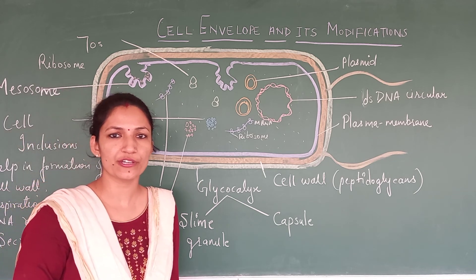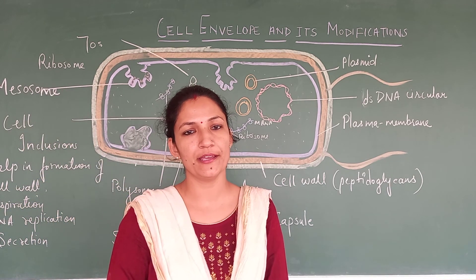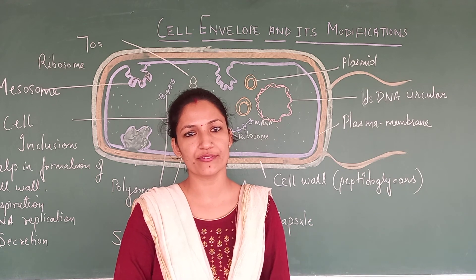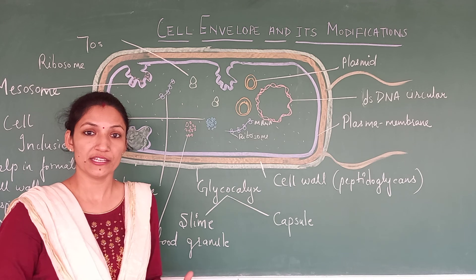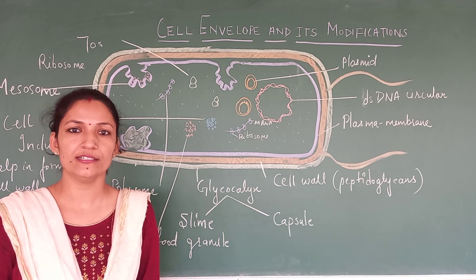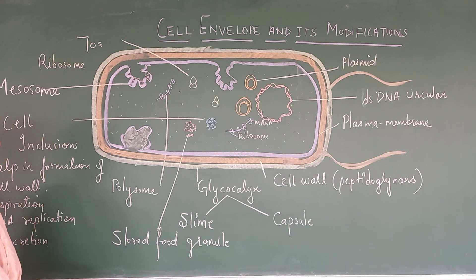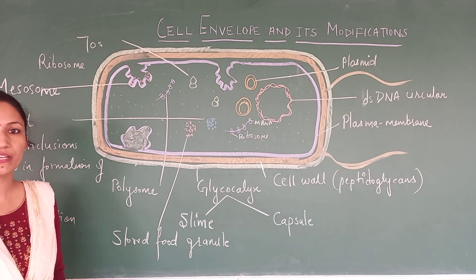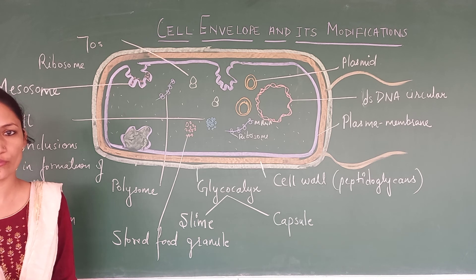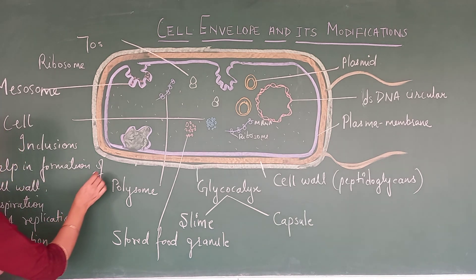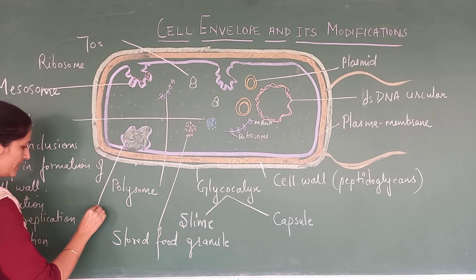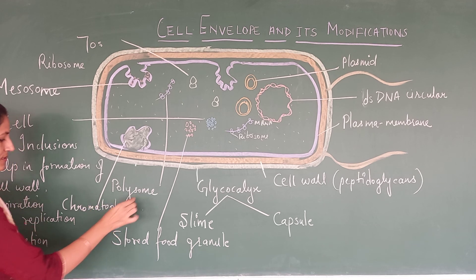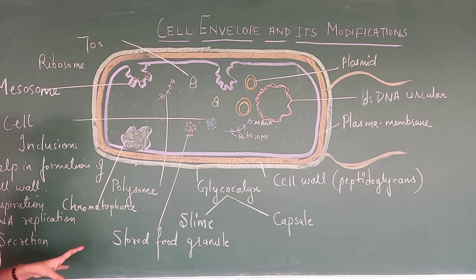In the prokaryotic cell, the cell does not contain any kind of organelles. So those functions will be performed by modifications of the plasma membrane. If this cell is photosynthetic — meaning if it is a cyanobacteria or a photosynthetic bacteria — one more special structure is present due to extension of this plasma membrane. When this plasma membrane extension contains chlorophyll, it is termed as chromatophore. This will help in photosynthesis.